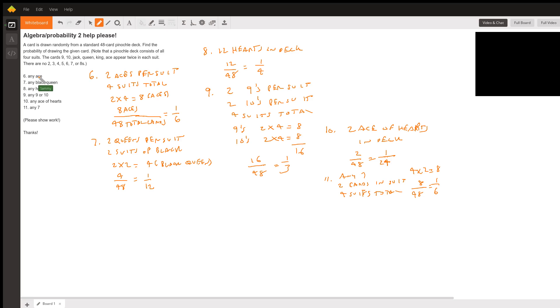Number 7 is any black queen. There are two queens per suit and there's two suits of black, so it's going to be 2 times 2 which is 4. So you have four black queens divided by a total of 48 cards. It's one-twelfth, one over twelve, one-twelfth probability for seven.